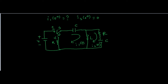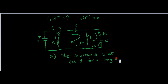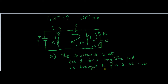Hello all, welcome to the new video. In this video we will be seeing how to solve a circuit involving R, L and C, and also a voltage source with a switch. The question here is: the switch S is at position 1 for a long time and is brought to position 2 at t equal to 0. What happens with the current I1 and I2 at just that instant, that is 0 plus?